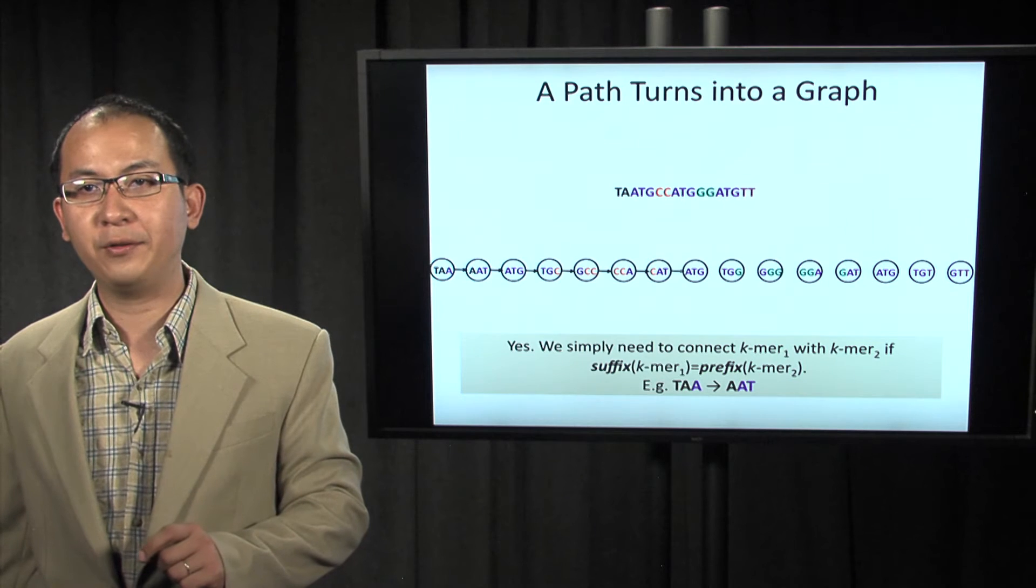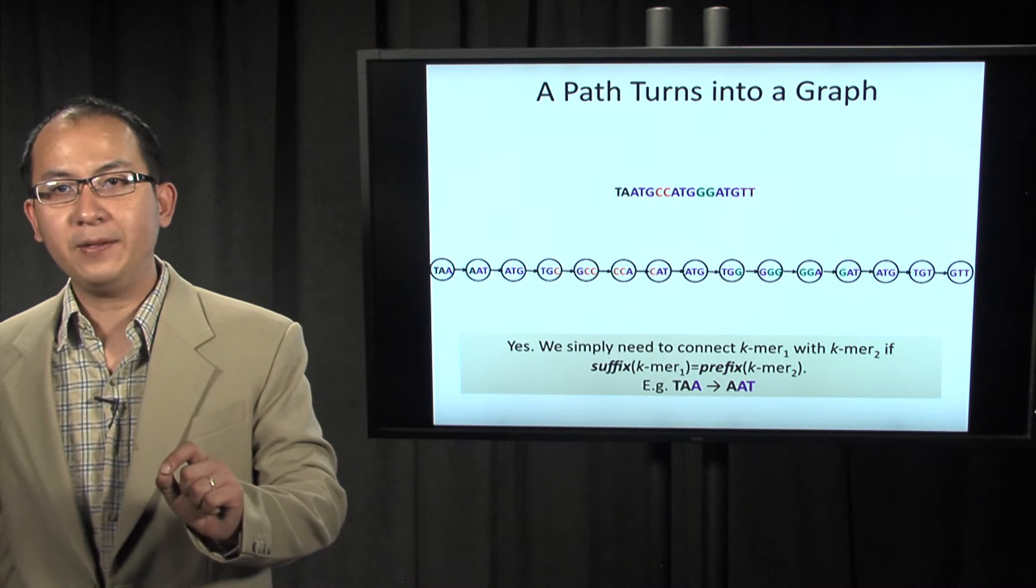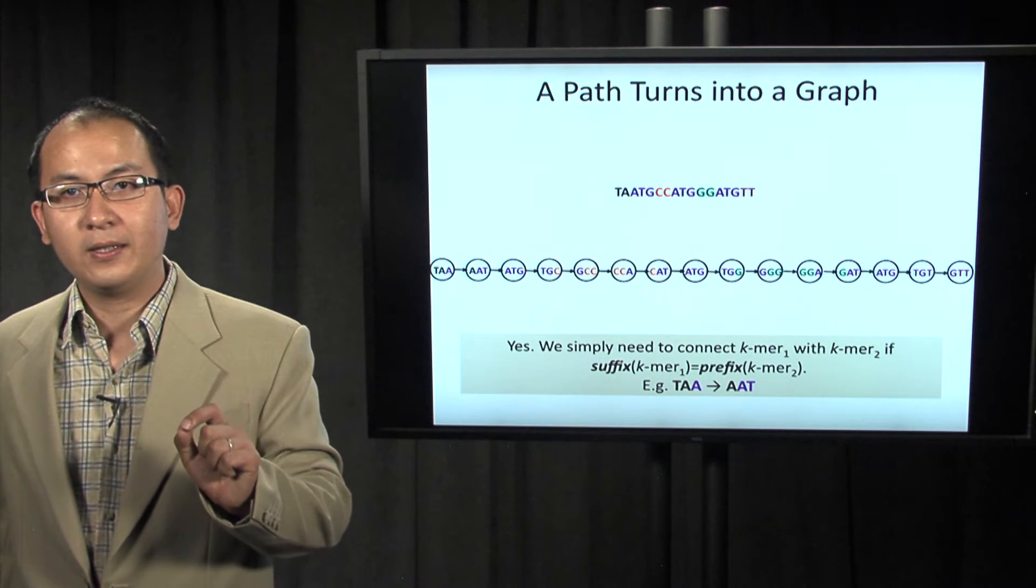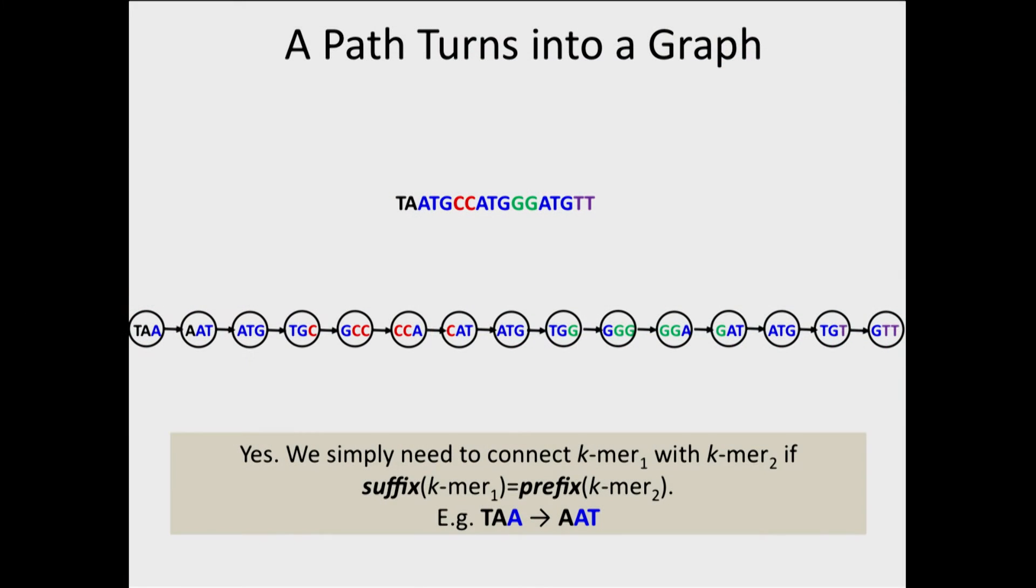Let's try to follow this idea. We connect all the nodes that overlap by 2-mers. Is that all? Can we construct the genome path already?